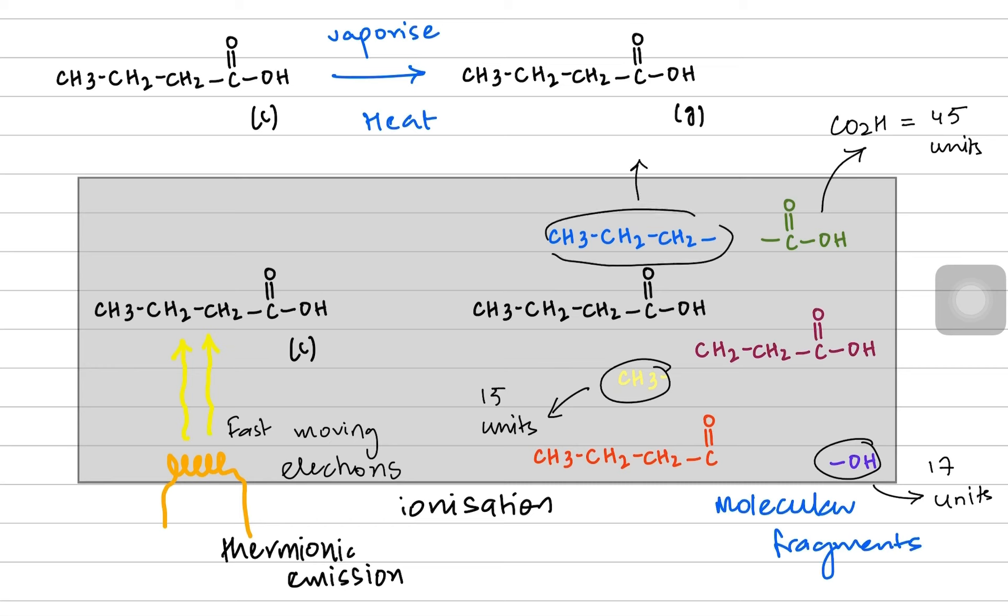If we talk about the mass of this blue fragment, it is going to be 3 carbons and 2 plus 2 hydrogens, so it's going to be 43 units. In a very similar way, if the molecule chooses not to break itself down you receive the biggest fragment and the mass of the biggest fragment is known as the molecular ion. It's going to be 88 units. The molecular ion means it was ionized but it did not break down.